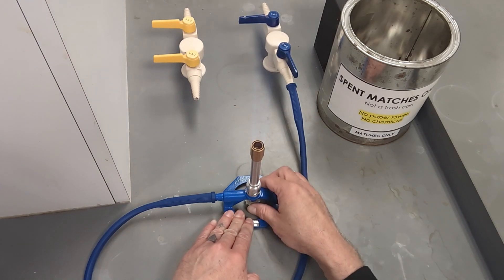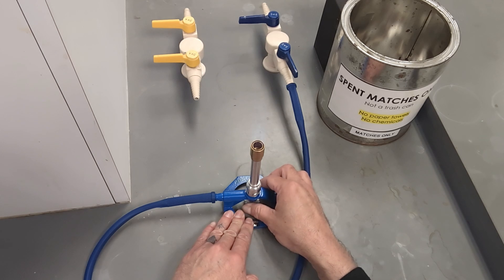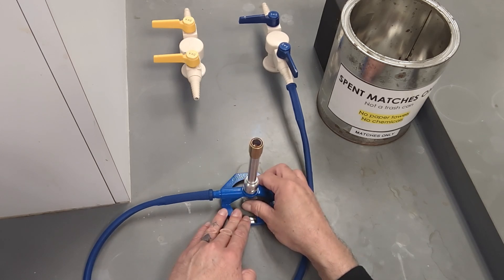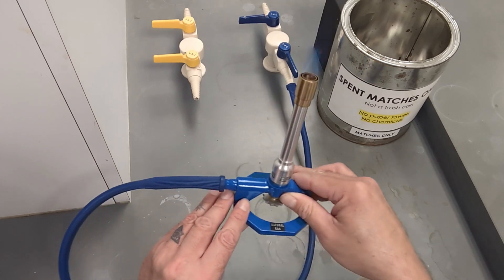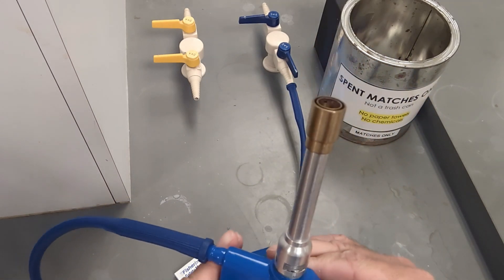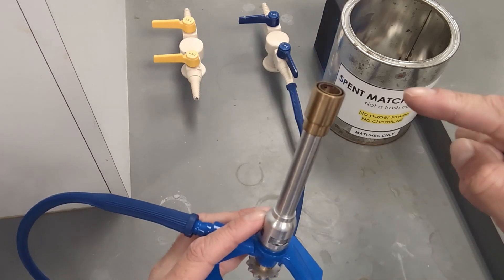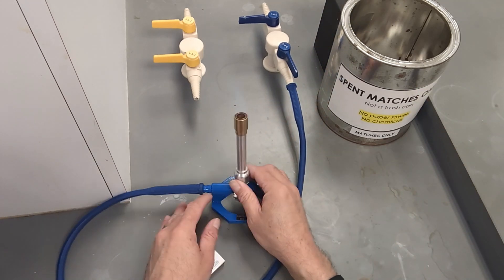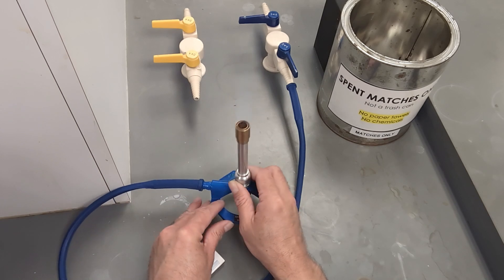And after lighting the Bunsen burner you can adjust the flame by opening the collar and the stopcock to make sure you have a small blue hot flame for any necessary hot heating procedures you may need.